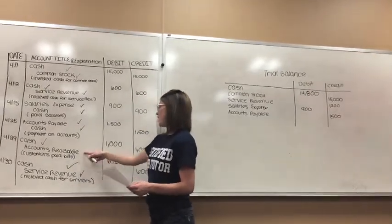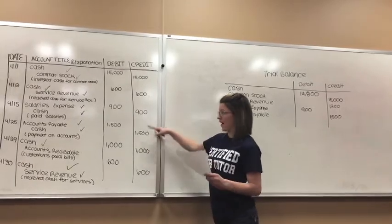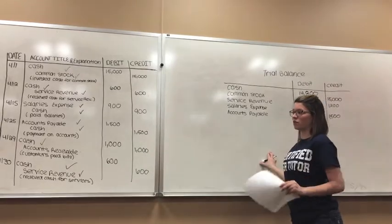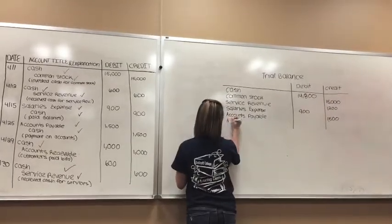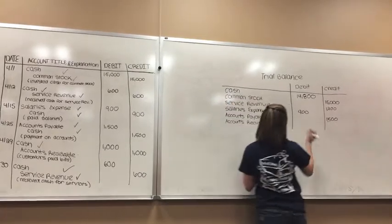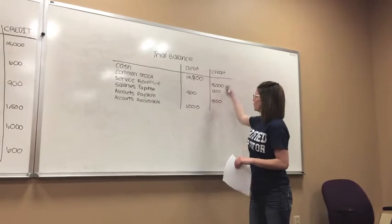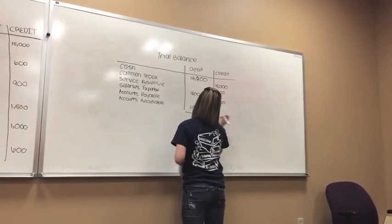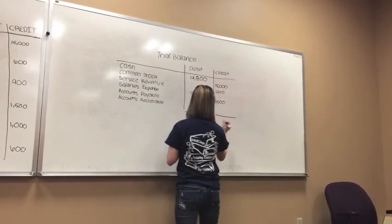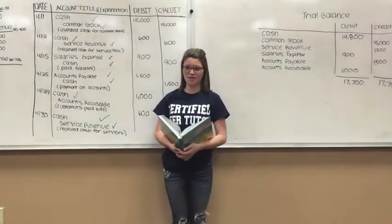The only thing we're left with now is accounts receivable. Accounts receivable was credited for $1,000, but just like accounts payable, it's going to actually have a debit balance when we bring it over here, due to the fact that accounts receivable is an asset. So accounts receivable goes as a debit for $1,000. The last step is to make sure both columns balance — we add up debits and credits and get $17,700 and $17,700. As long as they both balance, you know you did it correct.